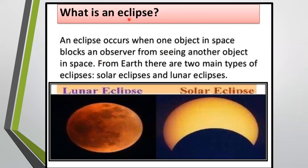What is an eclipse? An eclipse occurs when one object in space blocks an observer from seeing another object in space. From Earth, there are two main types of eclipses: solar eclipse and lunar eclipse. Lunar eclipse when the sun comes in between, and solar eclipse when the moon comes in between.